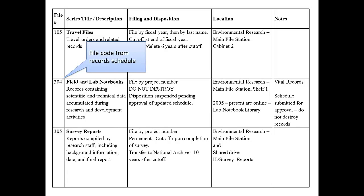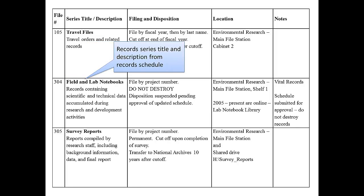The first column in this file plan lists the file number, or file code. This number ties the file plan back to the organization's approved record schedule. They've also included the record series title — that's the name the office uses to refer to this type of records. And they've included a short description of the records so others will be able to understand what the files are and how they're used. This information is usually taken directly from the record schedule, but the office could add more detail if needed.